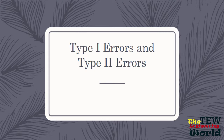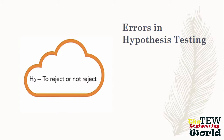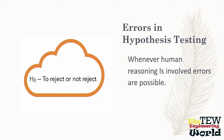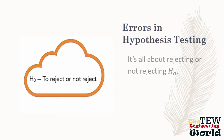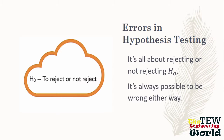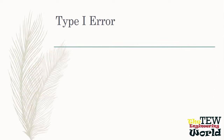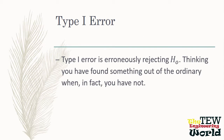Now we will learn about the two types of errors that are possible when testing a hypothesis. Any time human reasoning is involved, errors are always possible. With hypothesis testing, two types of errors are always in play. Since it is all about rejecting or not rejecting the null hypothesis, it is always possible to be wrong either way. Type 1 error is erroneously rejecting a null hypothesis — thinking you have found something special, something out of the ordinary, when really you have not.